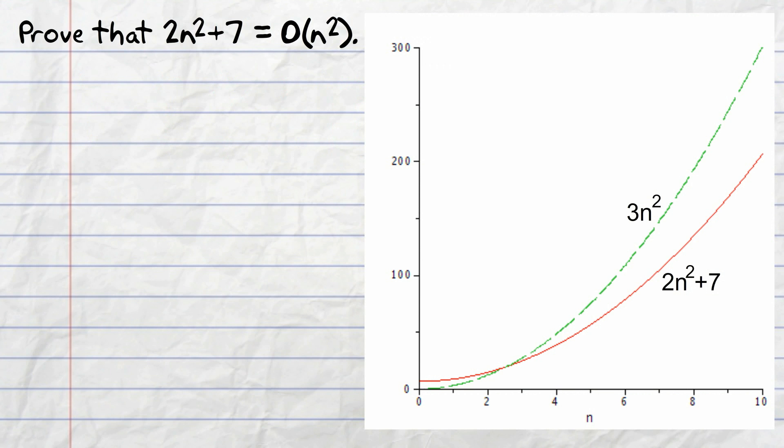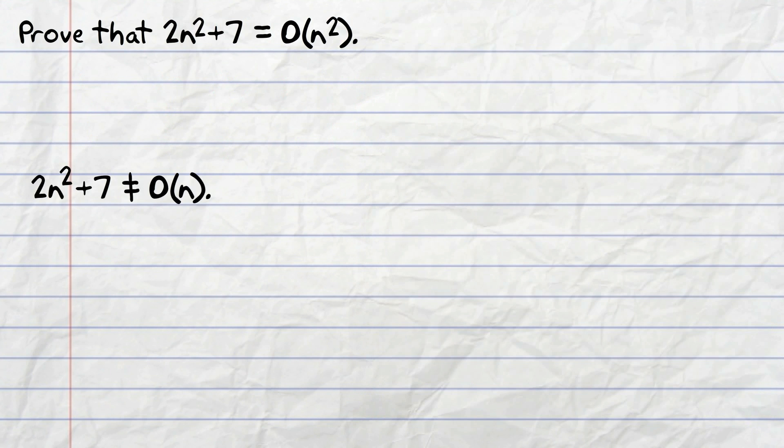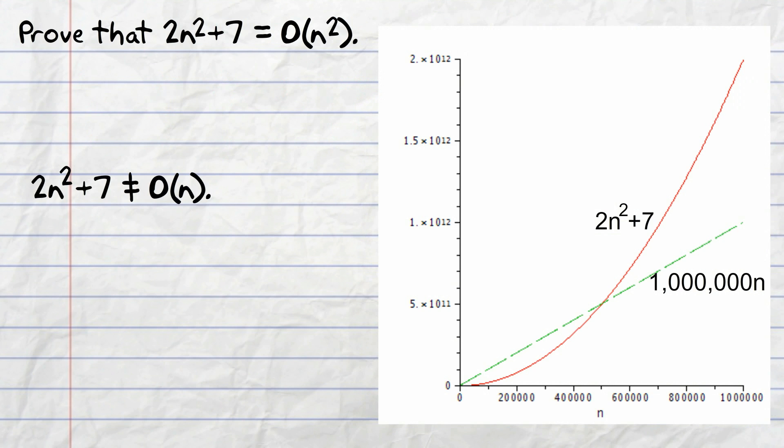In contrast, we wouldn't be able to find such a constant to show that 2n squared plus 7 is equal to O of n. Just as an example, I'm going to make the constant very big, a million. So let's graph a million n and 2n squared plus 7. And you can see after a while, as n gets bigger, 2n squared plus 7 actually overtakes a million n and becomes bigger. So no matter what constant you use, you'll always have that property that 2n squared plus 7 will overpower the n. And so that means that we can't say that 2n squared plus 7 is equal to O of n.